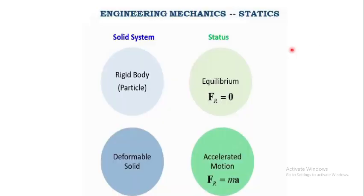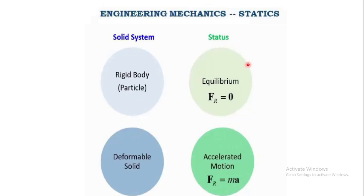In this slide we can see the three domains of engineering mechanics. The first domain concerns the type of system: a solid system with a rigid body or particle, and a deformable solid. There are two states of motion: the first deals with Newton's first law — the equilibrium region where Fr = 0; the second deals with the accelerated motion of a body where Fr = ma.